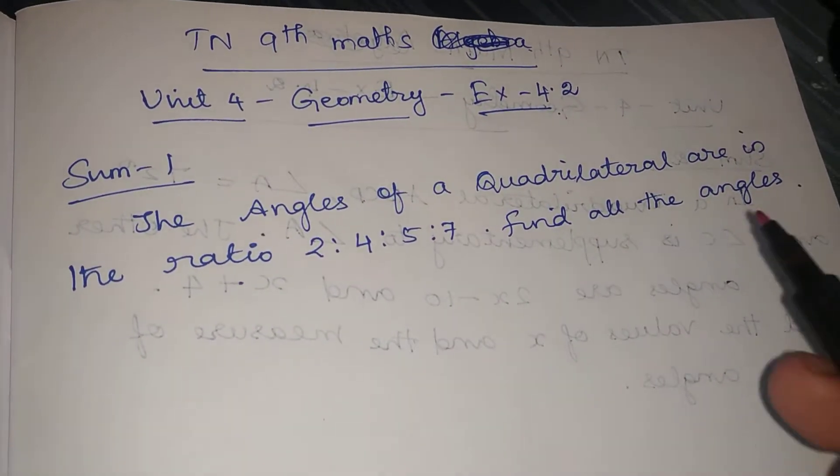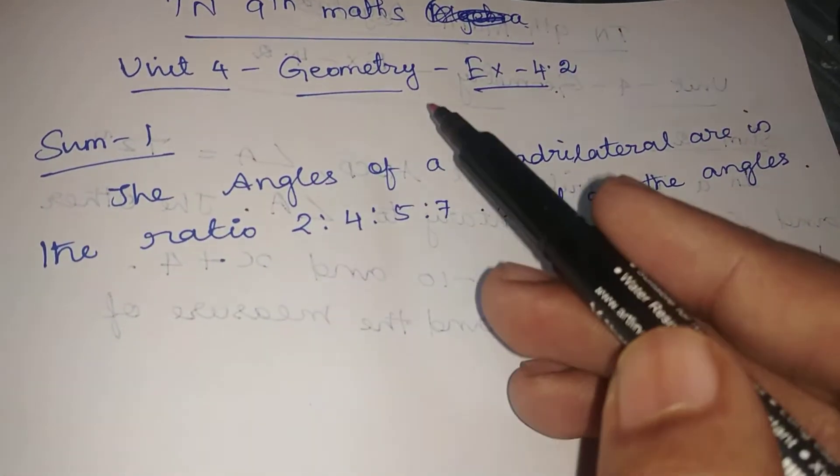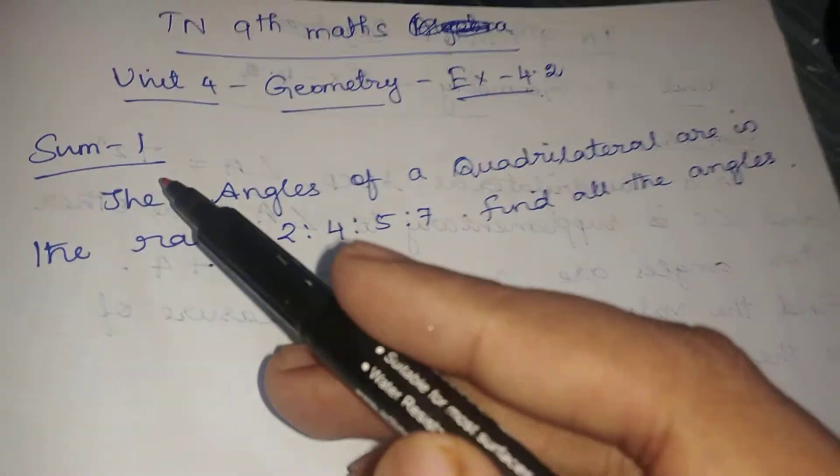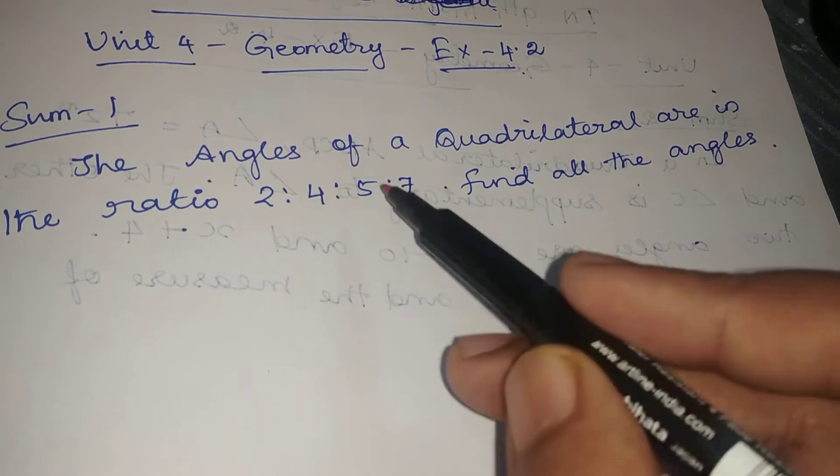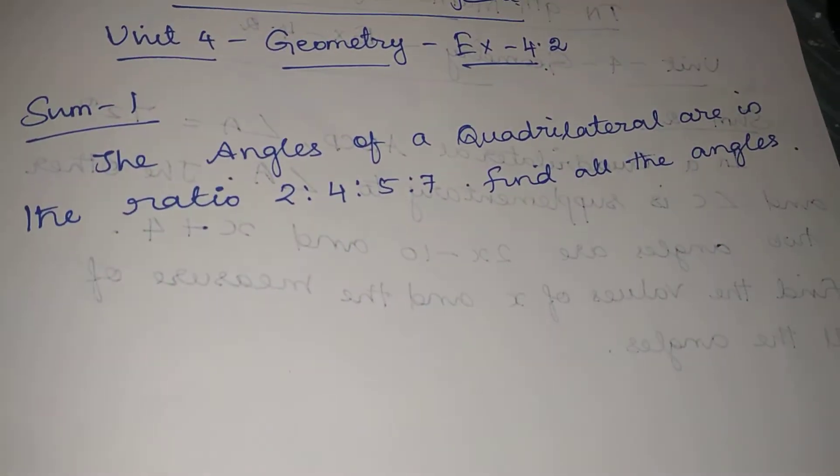Hi viewers, I am Abbas. In this video, TN 9th Maths Unit 4 Geometry Exercise 4.2. The angles of a quadrilateral are in the ratio 2:4:5:7. Find all the angles.